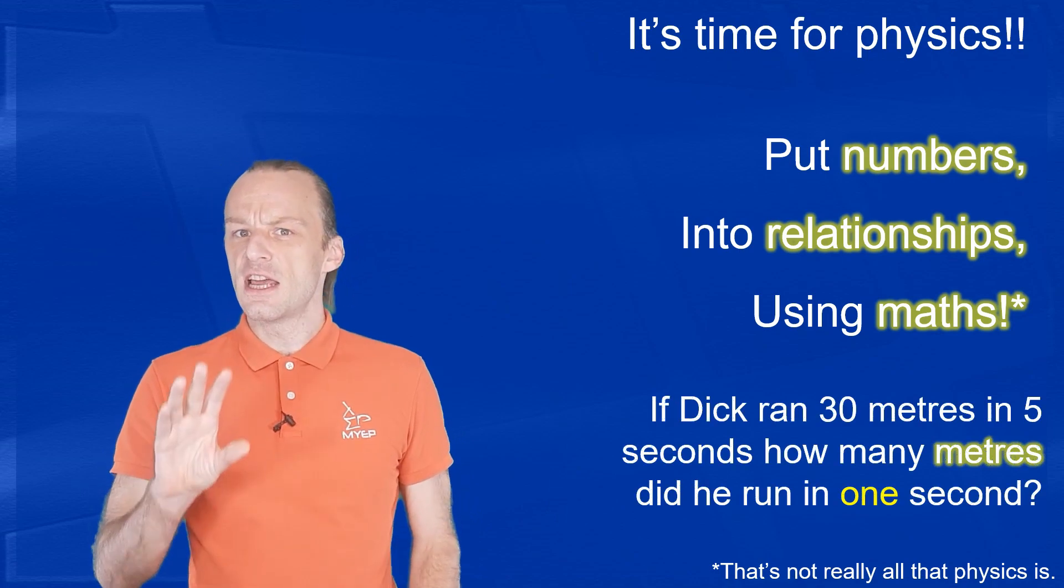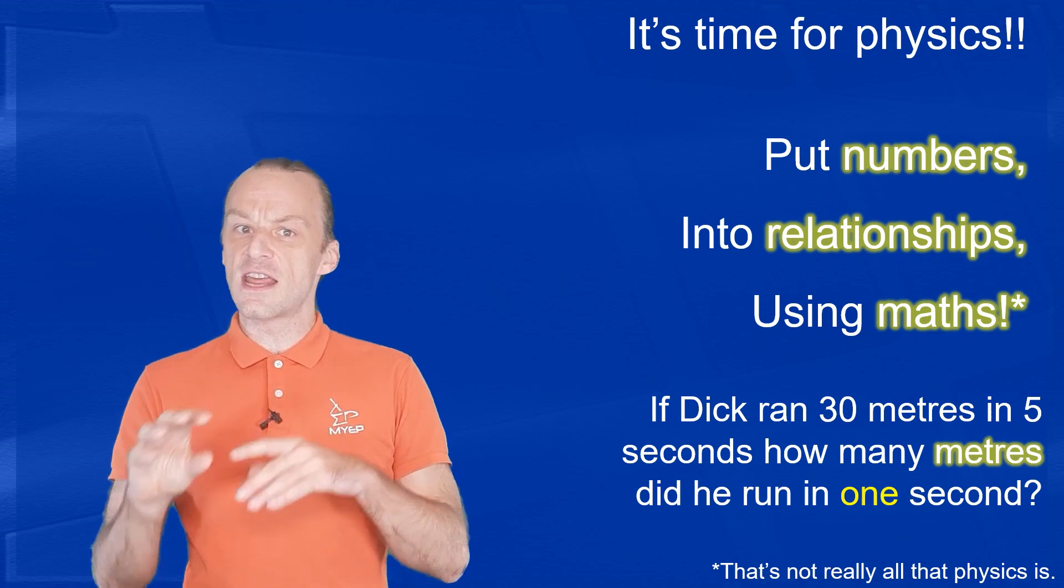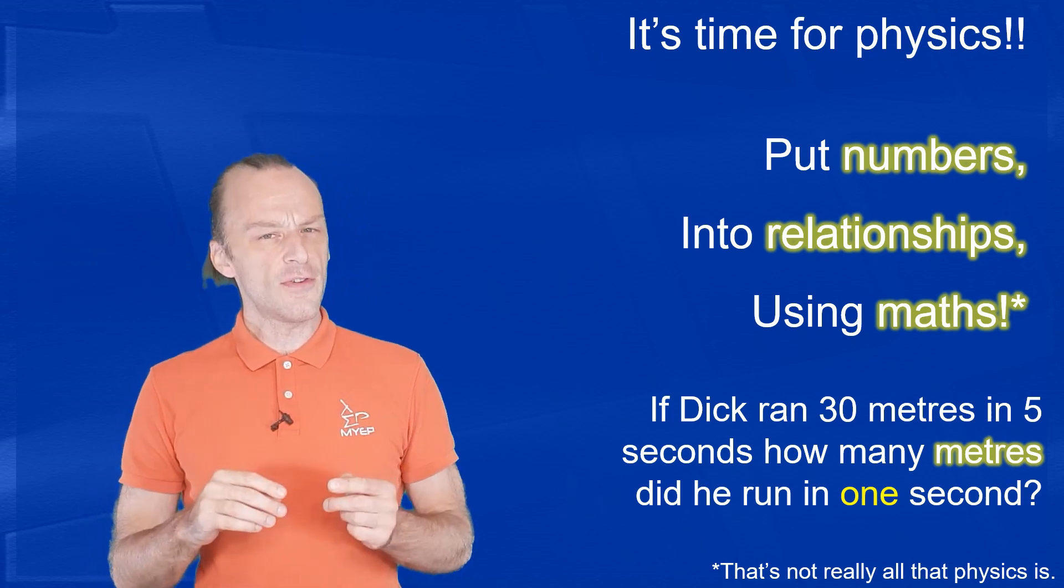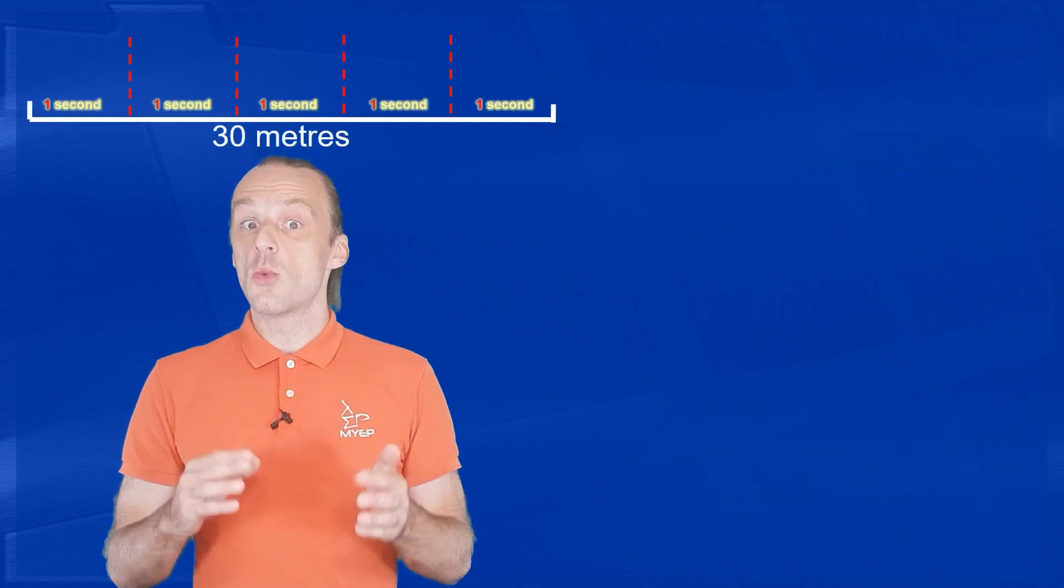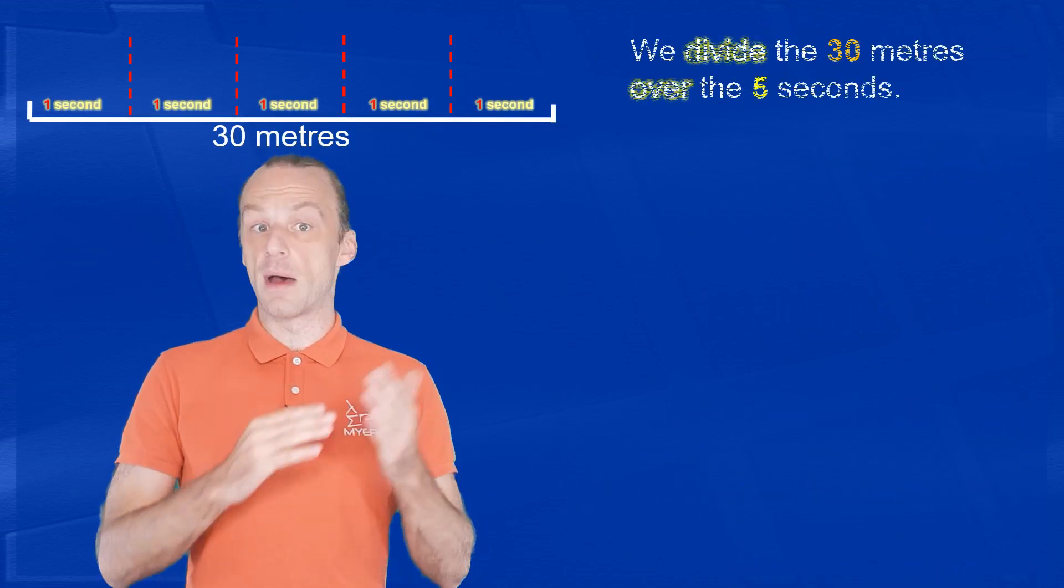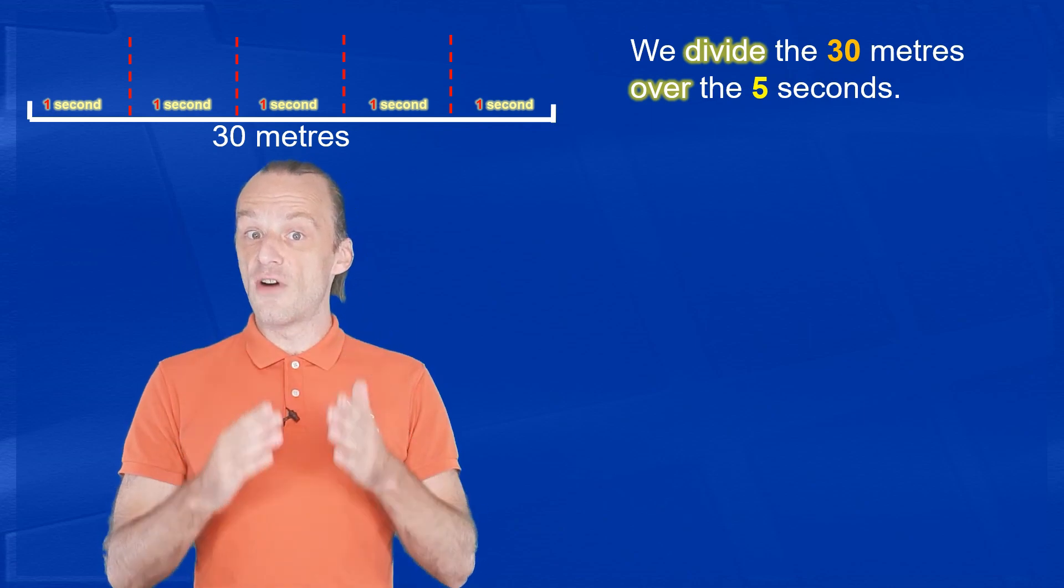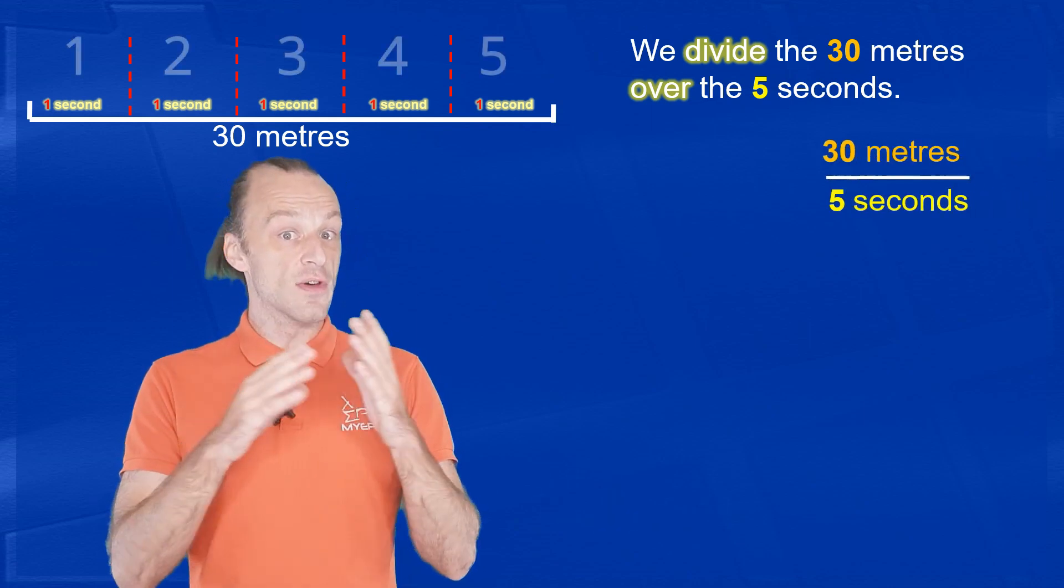First, we ask, if Dick ran 30 meters in five seconds, how far did he run in just one of those seconds? To answer that, we divide the distance by the time.